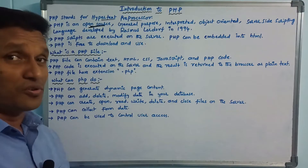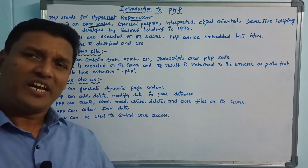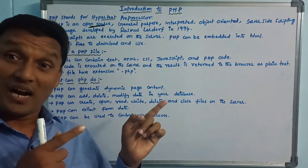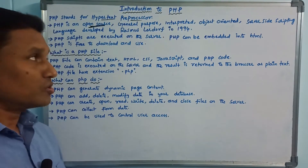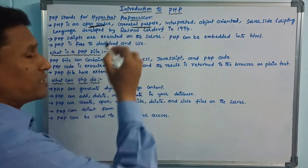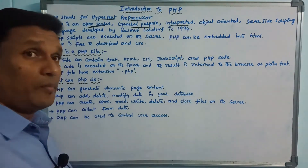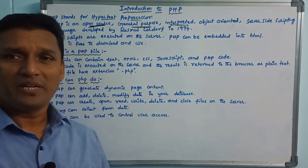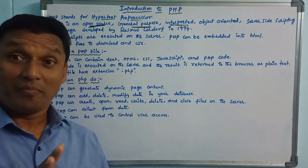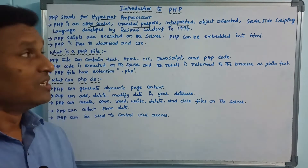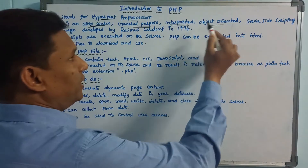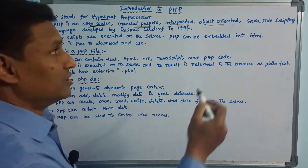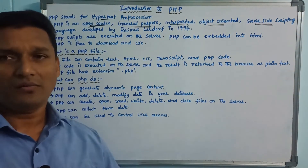General purpose means it can be used for any type of application — different types of applications, dynamic, runtime, server-side. Interpreted means without compilation; a compiler is not available. Object-oriented means class and object support is available. Server-side scripting language means the code runs on the server.